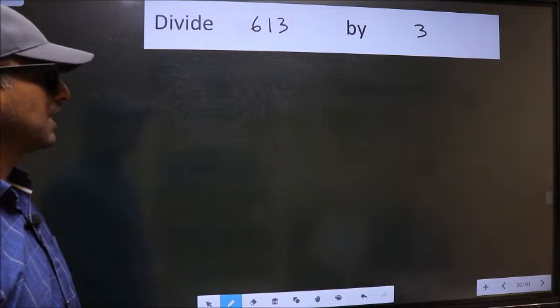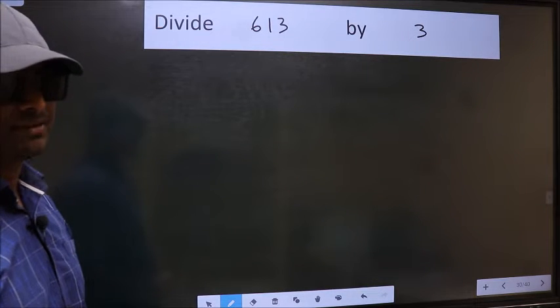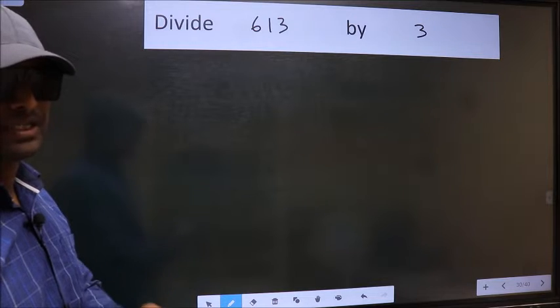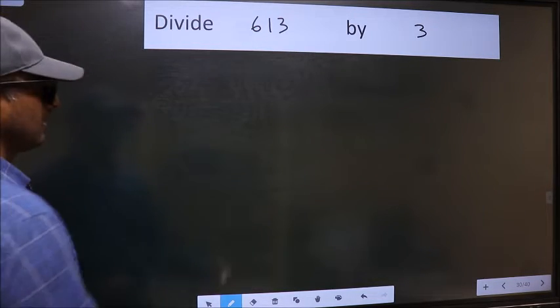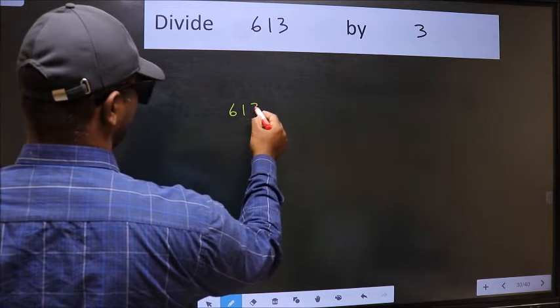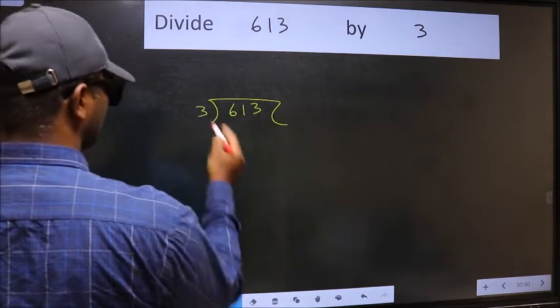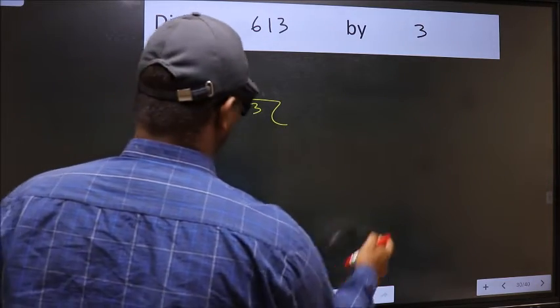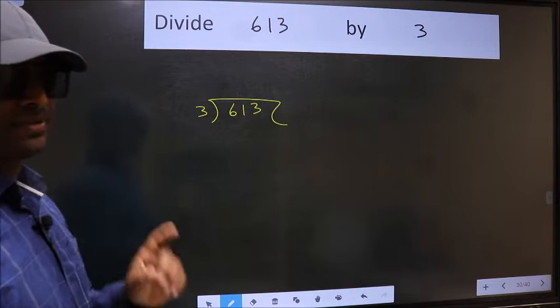Divide 613 by 3. To do this division, we should frame it in this way: 613 and 3 here. This is your step 1.